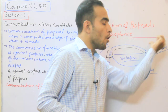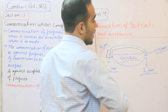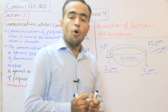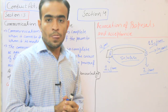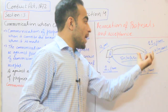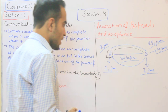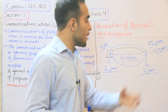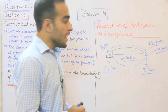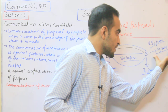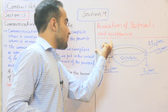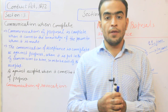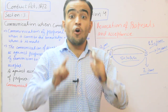اگر A نے 10 January کے بعد revoke کرنا چاہا — فرض کیجئے B نے telegram 11 January کو receive کیا — تو B کہے گا کہ میں نے آپ کا offer پہلے ہی accept کر لیا ہے اور letter post کر دیا ہے۔ اسی طریقے سے اگر B اپنا acceptance revoke کرنا چاہتا ہے تو B کے پاس maximum time ہے 17 January تک۔ یعنی جب تک A نے acceptance کا letter receive نہیں کیا، 17 January سے پہلے B اپنا acceptance revoke کر سکتا ہے۔ 17 January کے بعد revoke نہیں کر سکتا۔